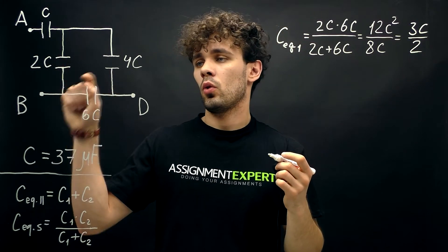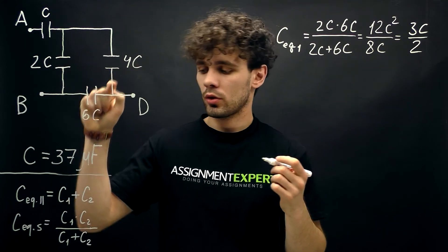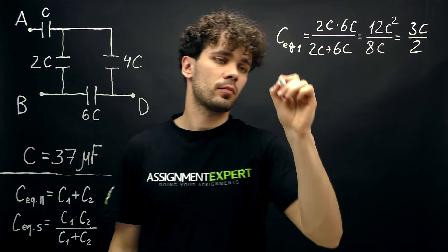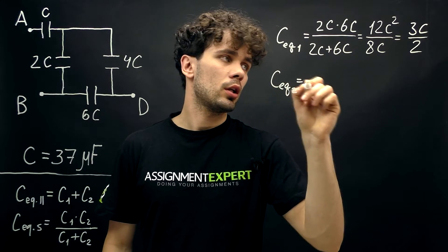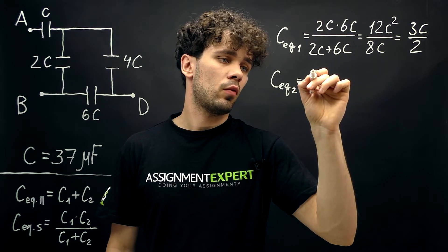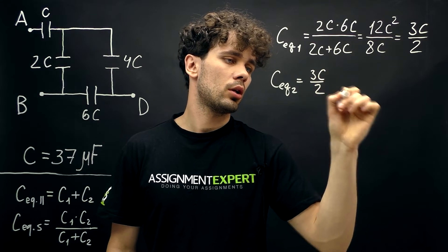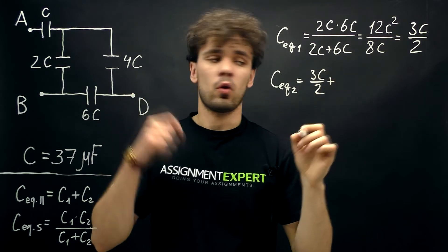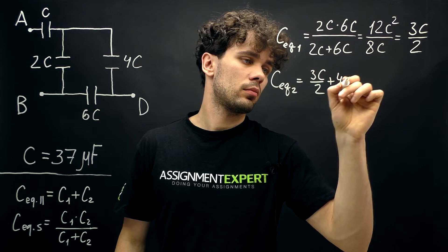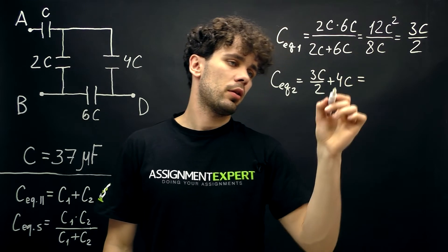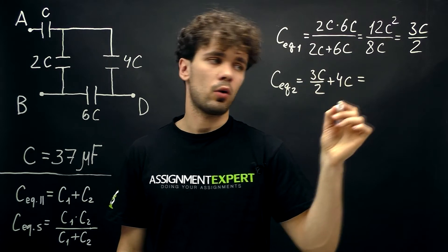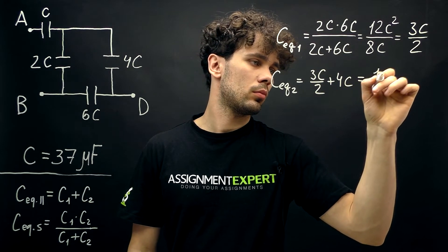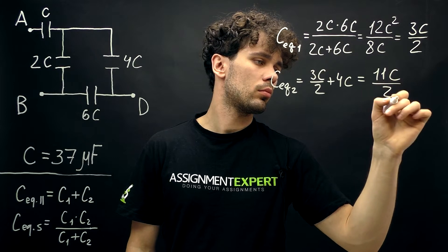Now these two are parallel to this one. So we'll use this formula. C equivalent two equals 3C over 2 plus 4C. And this is 8C over 2. So we get 11C over 2.